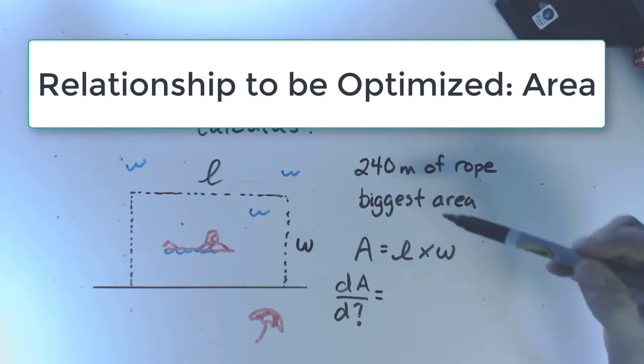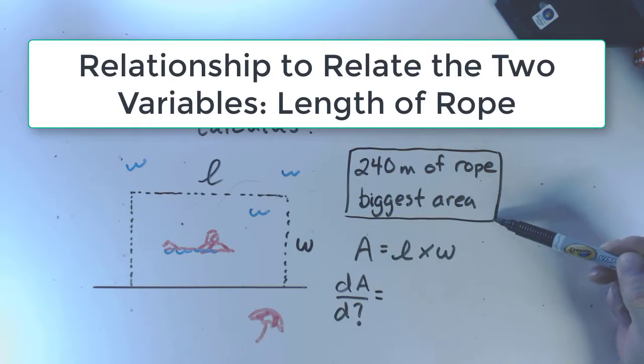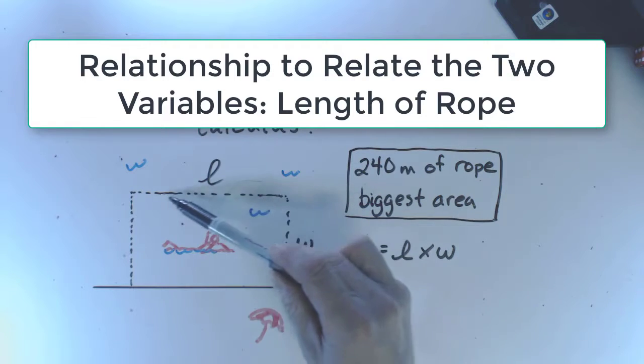The second piece of information is inevitably a constraint. In this case, there are 240 meters of rope that go all the way around the rectangle.